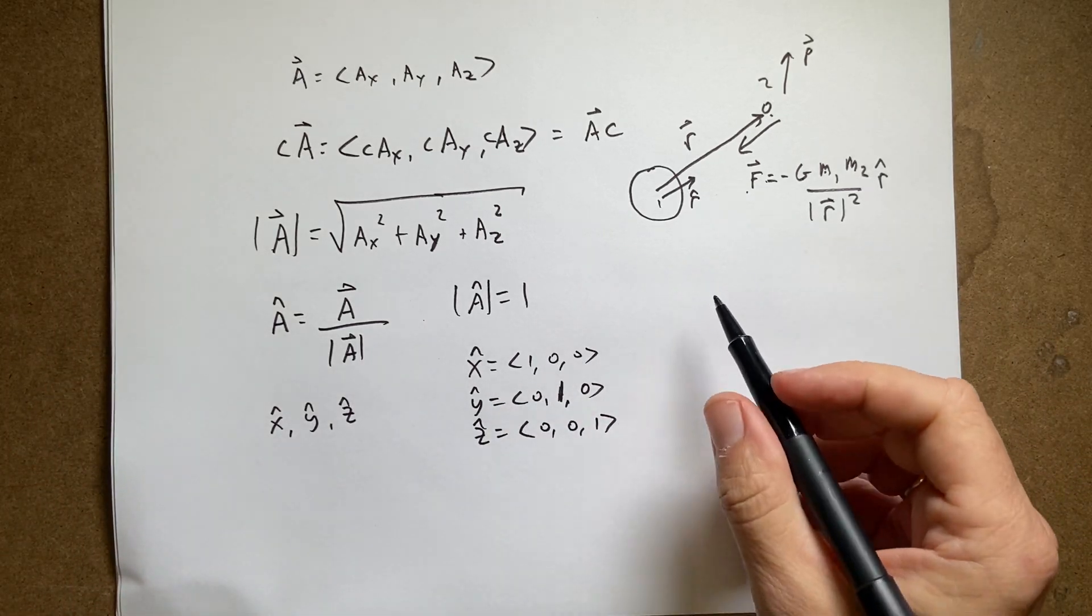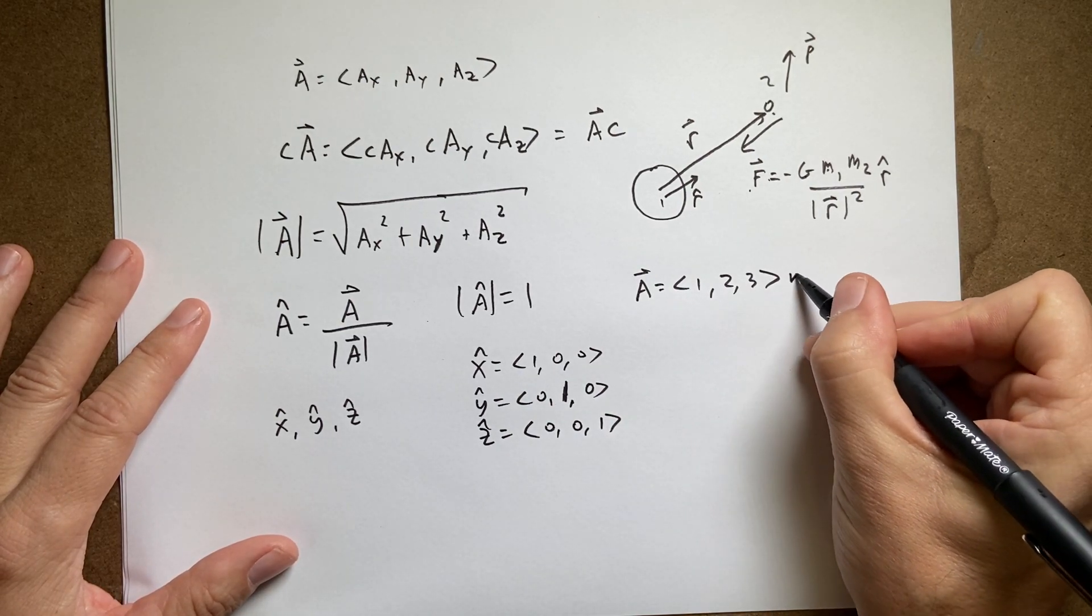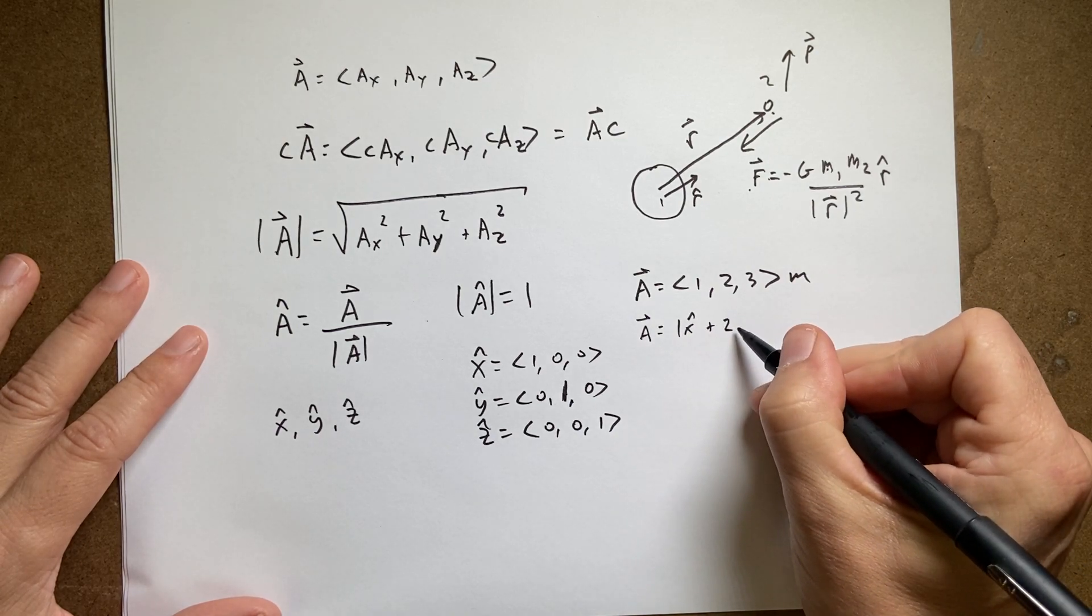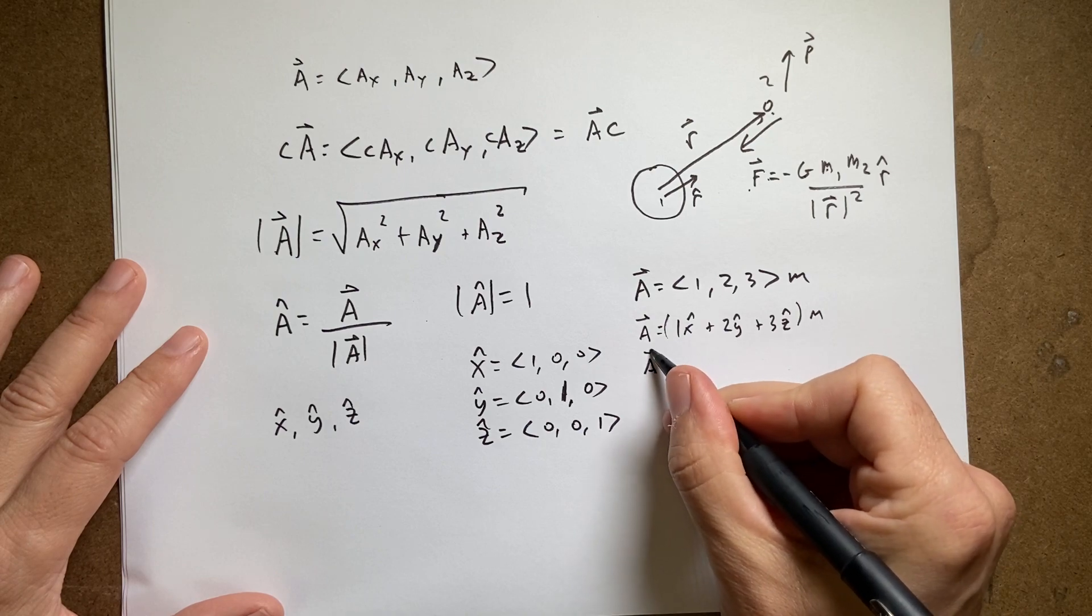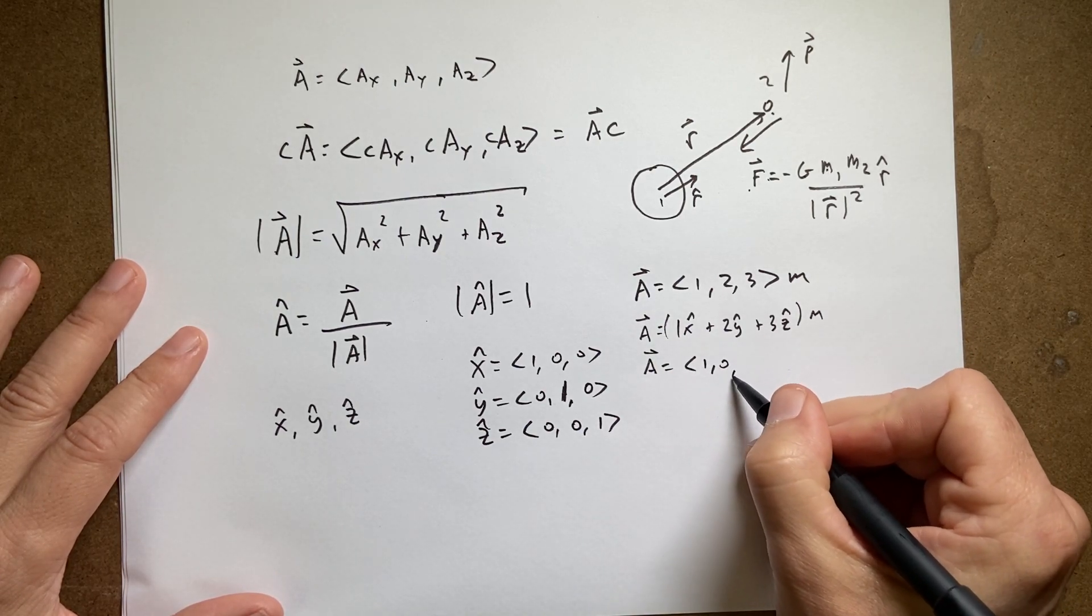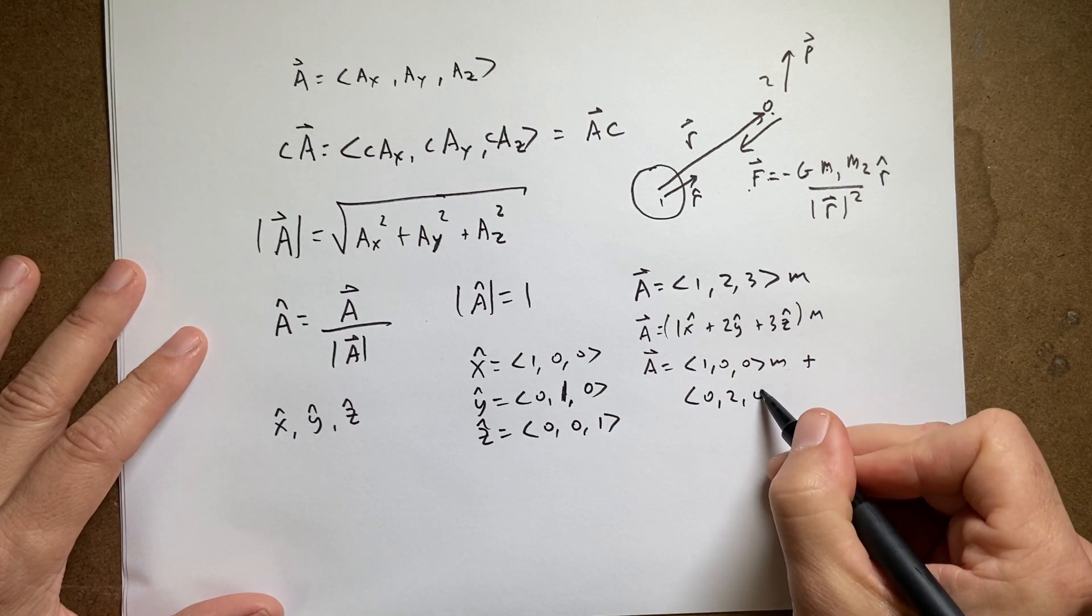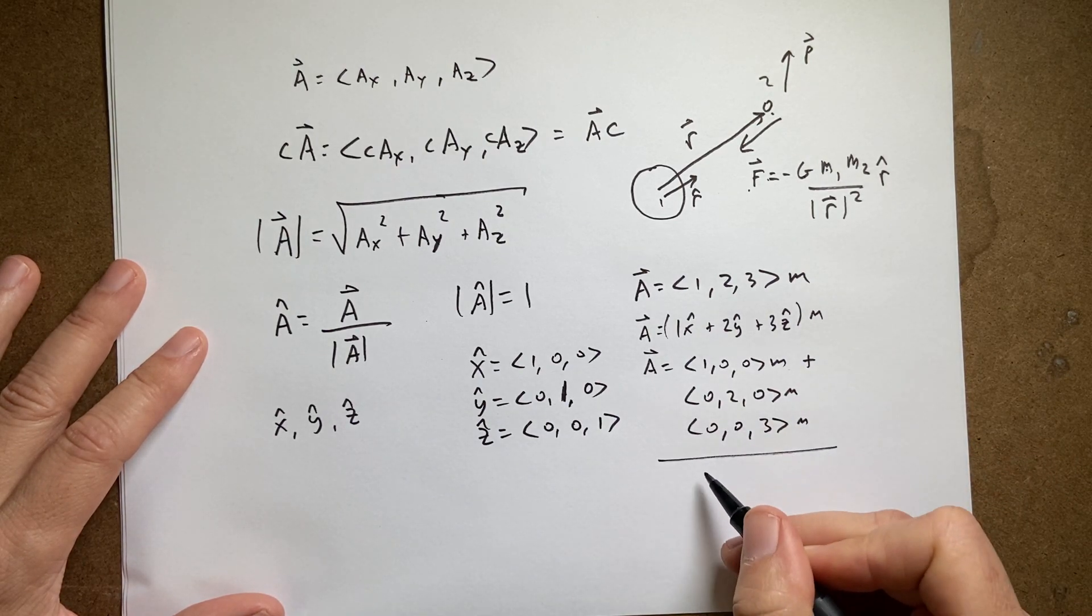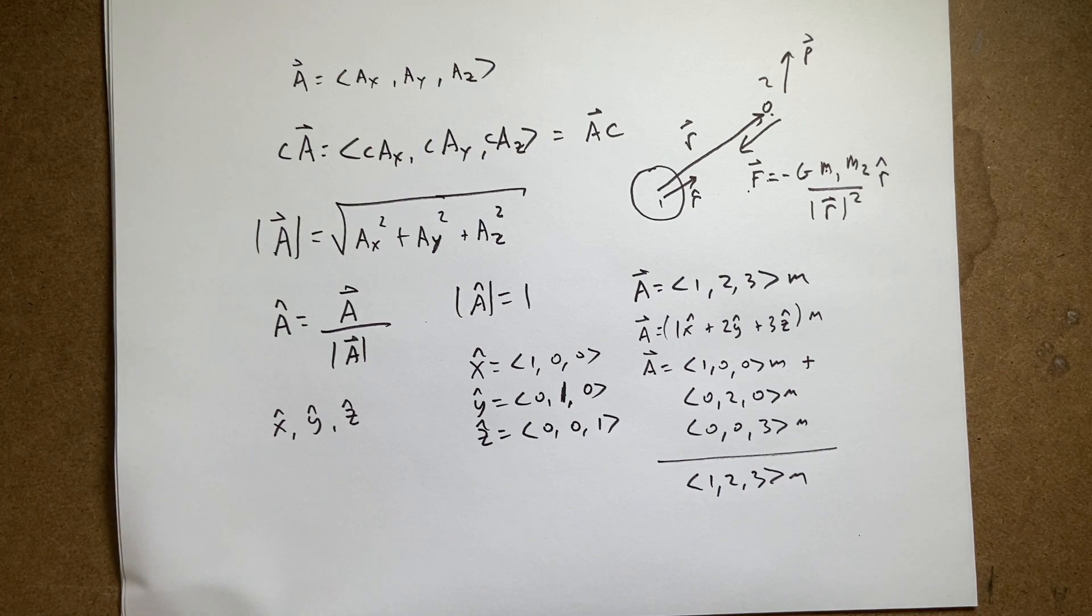So if I actually have this vector, let's write this out. Let's say a is equal to (1, 2, 3) meters. It's a position. I don't know what it is. It doesn't really matter. And I write this as a equals 1 x hat plus 2 y hat plus 3 z hat. I still need those units, meters. And now I write this as a equals 1 times x hat. That's going to be (1, 0, 0) times the meters plus 2 times y hat is going to give me (0, 2, 0) meters. 3 times z hat is going to be (0, 0, 3) meters. And if I add that all together, I get (1, 2, 3) meters. I don't know. It seems obvious. But I think we take those kind of things for granted and just kind of gloss over them a lot of times.